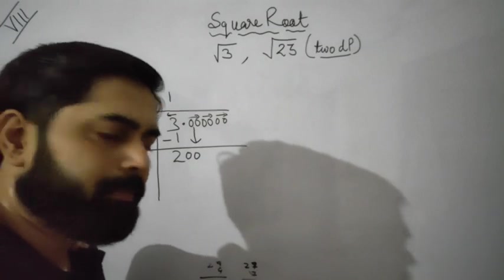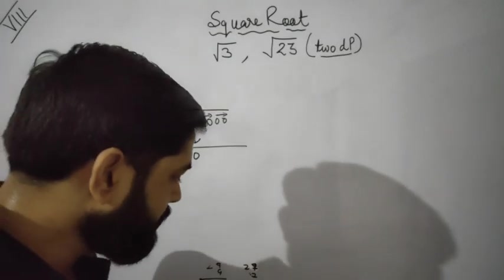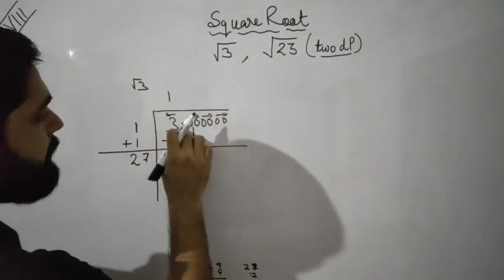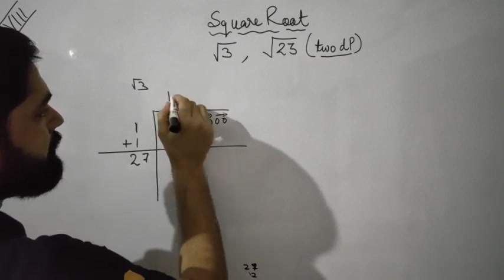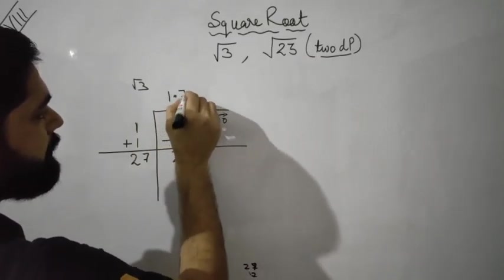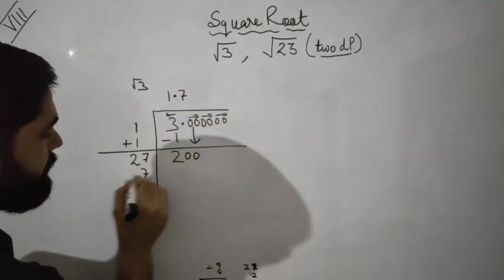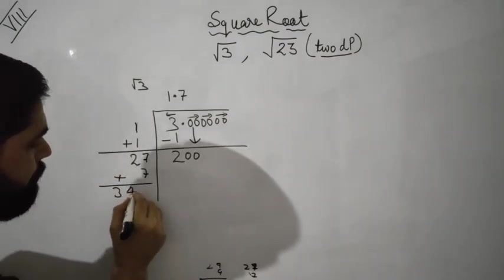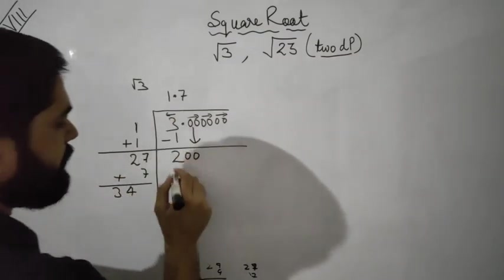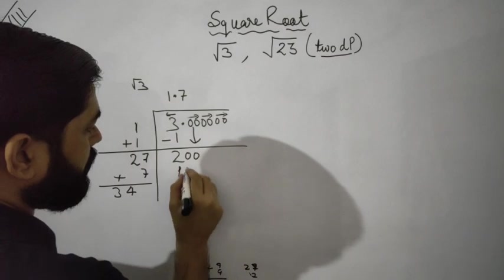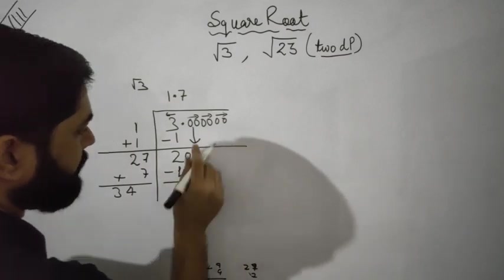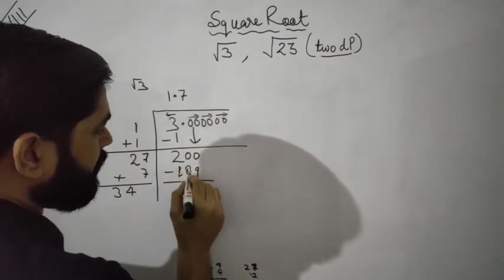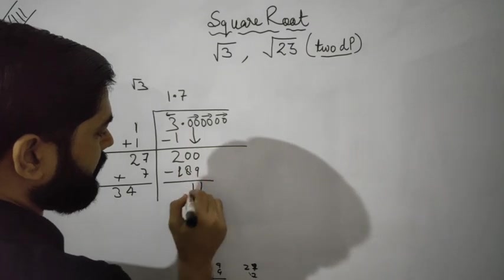By trial and error: 7 — 7 sevens are 49, 7 times 2 is 14 plus 4 is 18. So we write 7. Now there is a decimal point, so you use the decimal point here and write 7 above. Then add 7 to the same number, making it 34. Then subtract: 189 from the remainder, giving 11. Here is 0, then bring down 20 20.